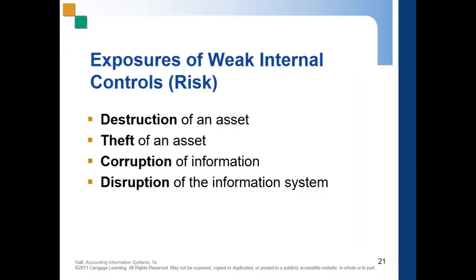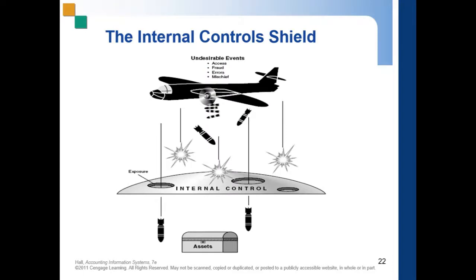Exposures, as you can see in the figure illustrated as holes in the control shield, increase the firm's risk to financial loss or injury from undesirable events.